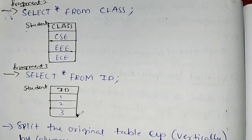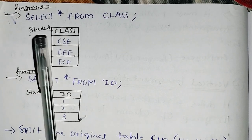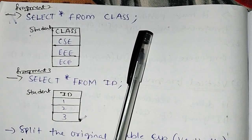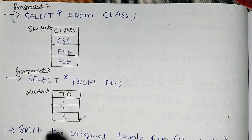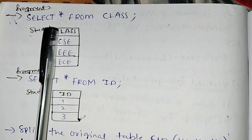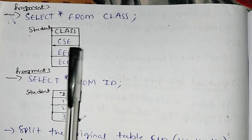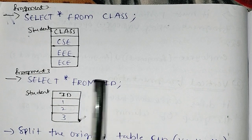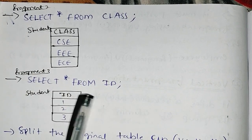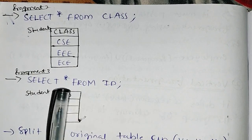Next, we take fragment 2. We select star from class. In class, there is a fragment — values like C, E, E, E. Select star from the class column; in class there is a 'Mam' value.